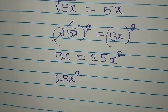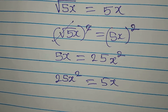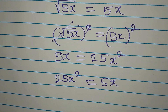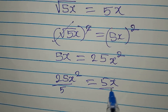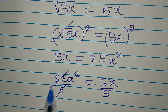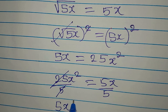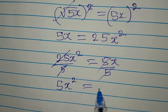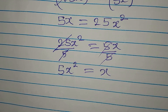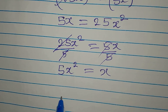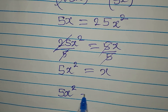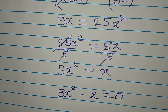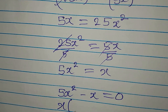Now let's write with the highest power first: 25x squared equals 5x. We can simplify this equation by dividing both sides by 5, giving us 5x squared equals x. Bringing everything to the left, we have 5x squared minus x equals zero.